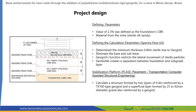The second step was to define the calculation parameters through the SpectraPave software. This step determines the quantity of layers and the quantity of geogrids to be applied according to the project. The third step was to calculate the stability of the platform for the designed project, using the software named PCASE, which is developed by the U.S. Corps of Engineers.